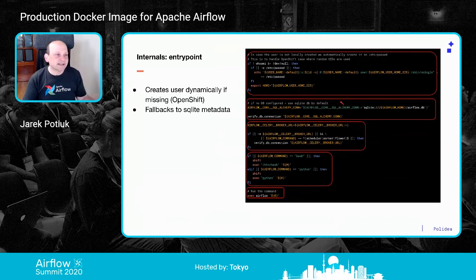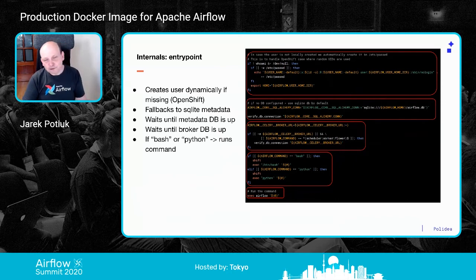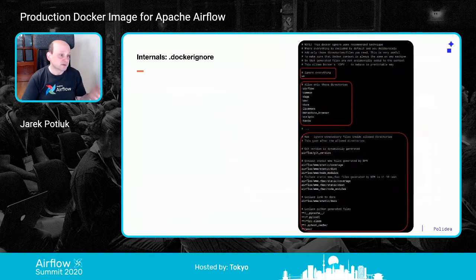The entry point dynamically creates the user for OpenShift. It detects or sets the right database, then waits until the database is up before Airflow starts — so Airflow won't start before the database is ready. We also wait for the message broker if configured. By default, when you run the production image you run an Airflow command. If you run 'db create' it will create the DB. Two exceptions: you can pass 'bash' or 'python' as the first parameter to run bash or Python commands directly.